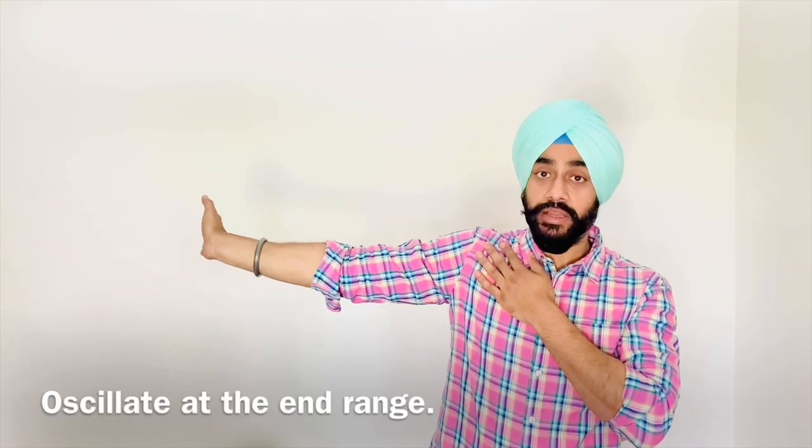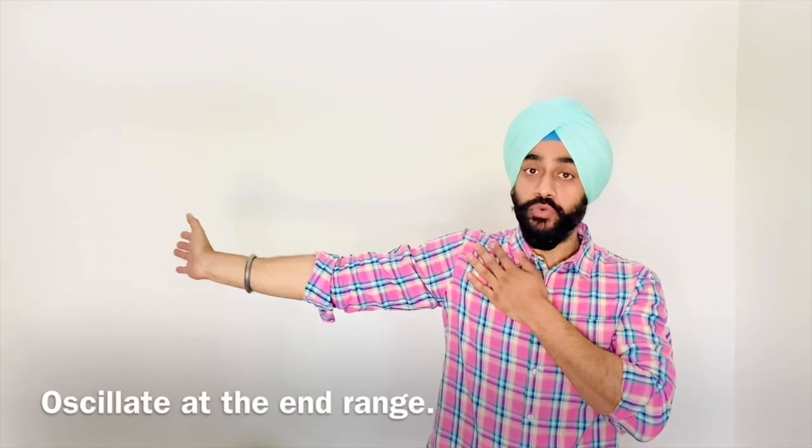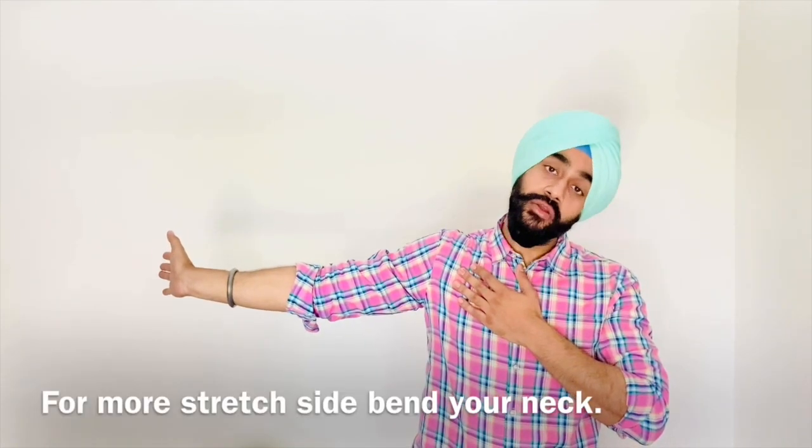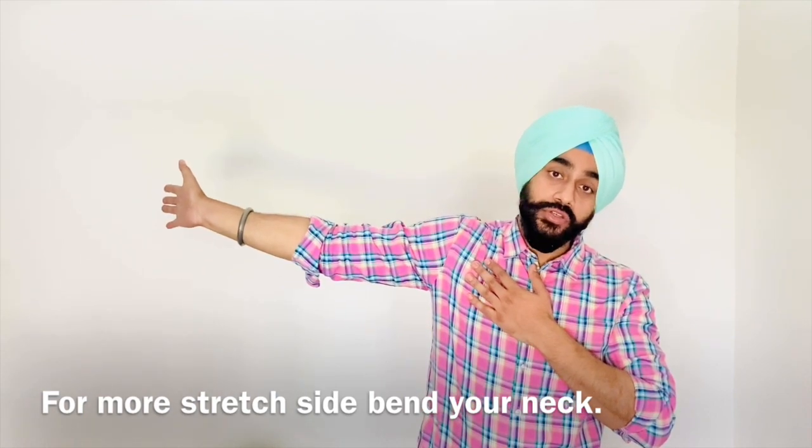So by moving the shoulder in this position, hand backwards, oscillate at the end. You have to move your arm in the back direction. In case you are not feeling the stretch, you can bend your neck sideways or you can move your shoulder a little bit upwards and back.